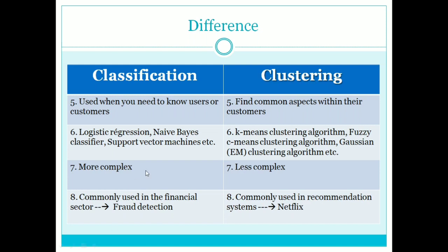Classification algorithms are mainly used in the financial sector for prediction, fraud detection, and email spam filtering. Clustering algorithms are commonly used in recommendation systems — for example in Netflix, YouTube, or Amazon — to group things together for recommendations.